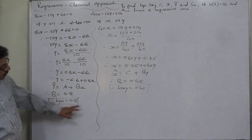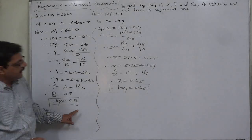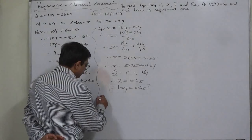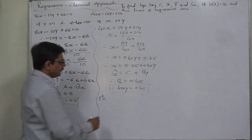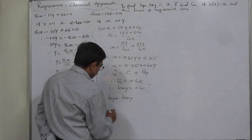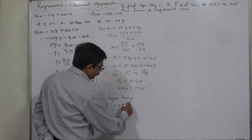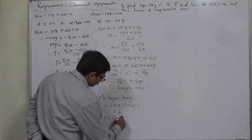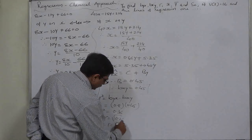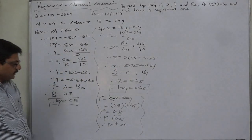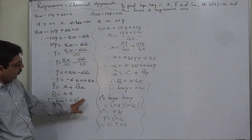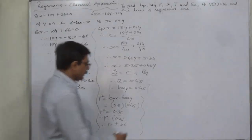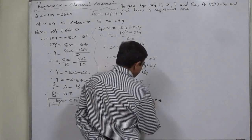Now, verification: both b_yx and b_xy are less than 1, and both have the same sign. This confirms our assumption was correct. We can now find the coefficient of correlation. The squared value of the coefficient of correlation equals the product of the two regression coefficients: r² = 0.8 × 0.45 = 0.36. The square root gives r = ±0.6. Since both regression coefficients are positive, by the important property that all three coefficients share the same sign, the coefficient of correlation is positive 0.6.